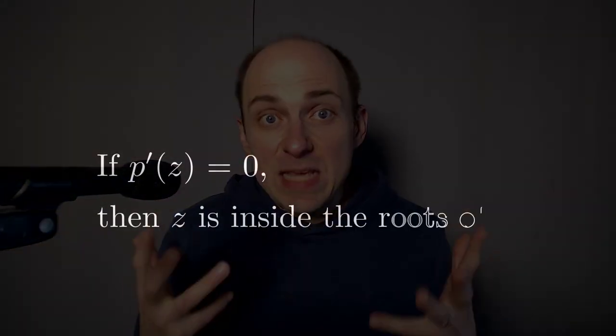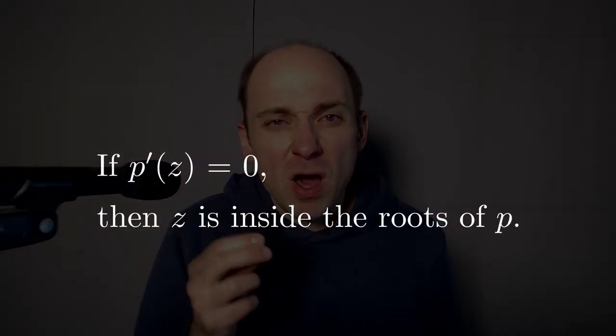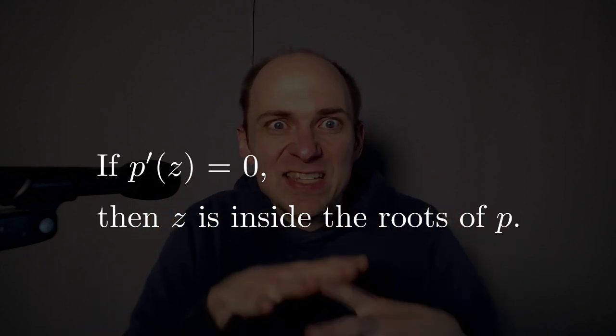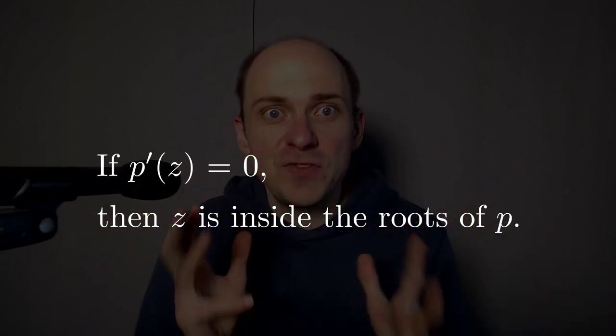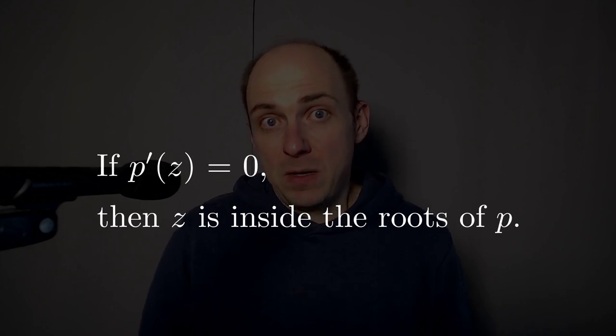So this is what I want to show. I want to show that if p prime of z equals zero, if z is a root of the derivative of p, then z is inside the roots of my original polynomial p.